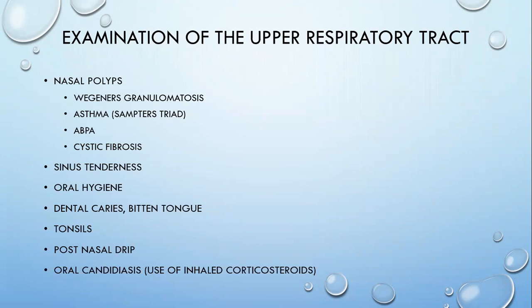In cardiovascular system examination, look for dental caries as a source of infective endocarditis, which can be associated with lung abscess. Look for the tonsils — tonsillitis could be present. If the tonsil is enlarged along with an edematous uvula, that means the patient is having gastroesophageal reflux disease, which could be a source of aspiration. Look for post-nasal drip — mucus discharge from upper respiratory tract infection can be a cause of nocturnal cough. Oral candidiasis should make you think of use of inhaled corticosteroids.